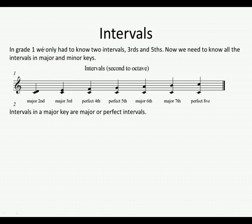For example, if you had D to F sharp — remembering that there is an F sharp in the D major scale — D, E, F sharp — that would be your major third, because D does have an F sharp in D major. But working with C major, where there are no sharps or flats, you'd get major second, major third, perfect fourth, perfect fifth, major sixth, major seventh, and perfect octave.